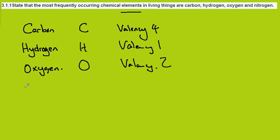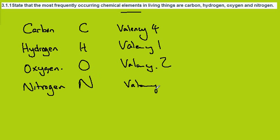And finally, Nitrogen — an important component of protein — symbol N, with a valency of 3. These are the 4 most common elements in living things on Earth.